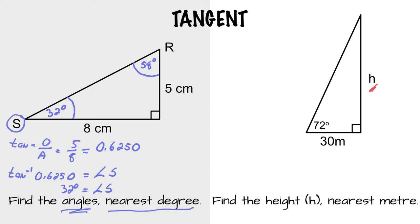Again, simply using tangent, we'll say tangent 72 degrees equals opposite over adjacent. So opposite is h. Adjacent is 30.